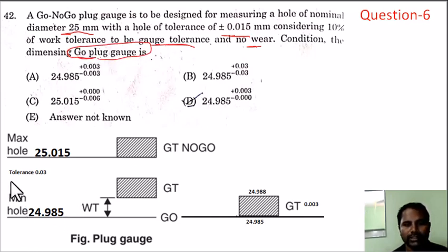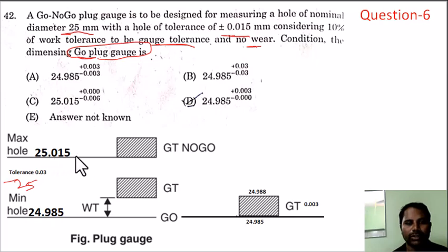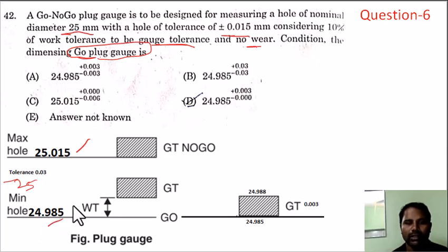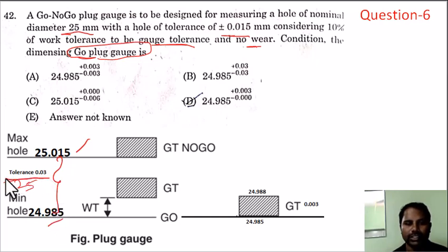The nominal size is 25 and the tolerance value is 0.05, so the maximum limit is 25.015 and the minimum limit is 25 minus 0.015. The tolerance zone difference is 0.03. This is the work tolerance of 0.03.